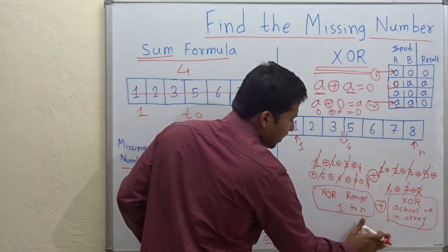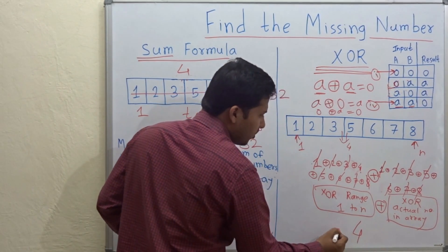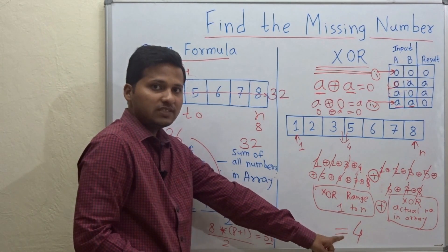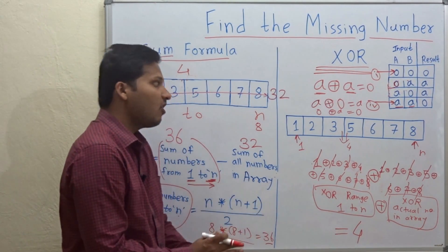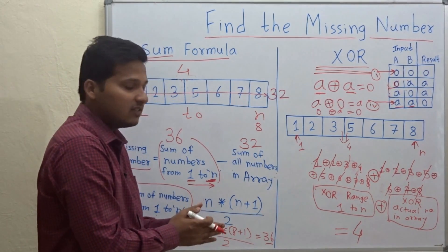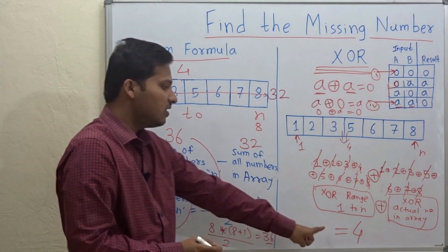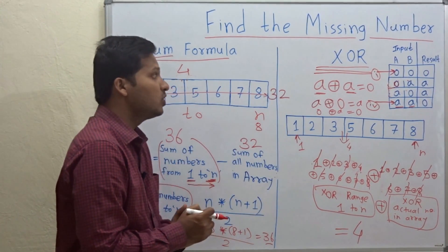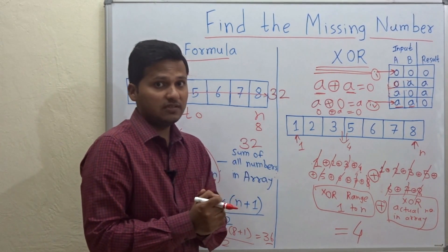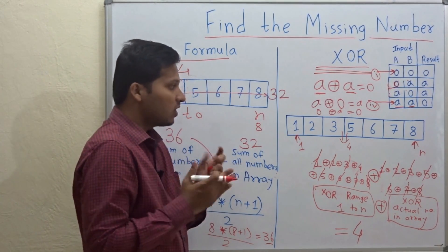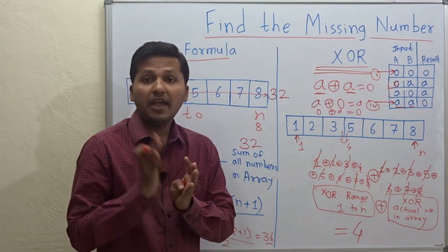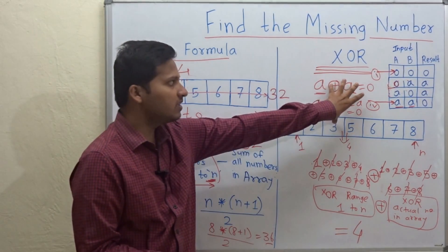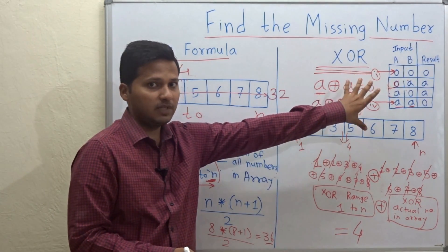So 4 XOR 0 is 4 — we got the missing number which is 4. This is how by using the XOR operation we get the missing number. Because XOR is a bitwise operation, the program becomes very fast and efficient. Always make sure that you use this method in competitive programming.